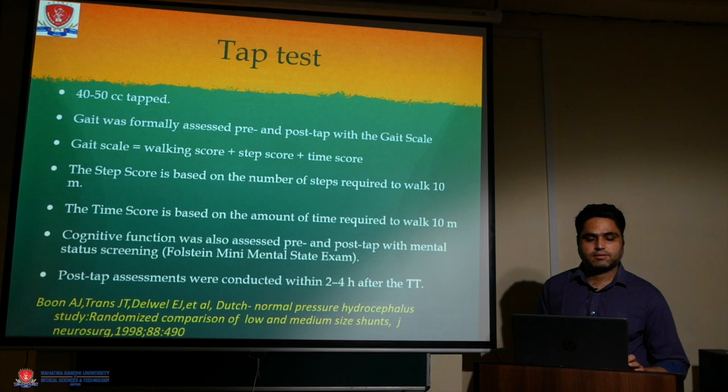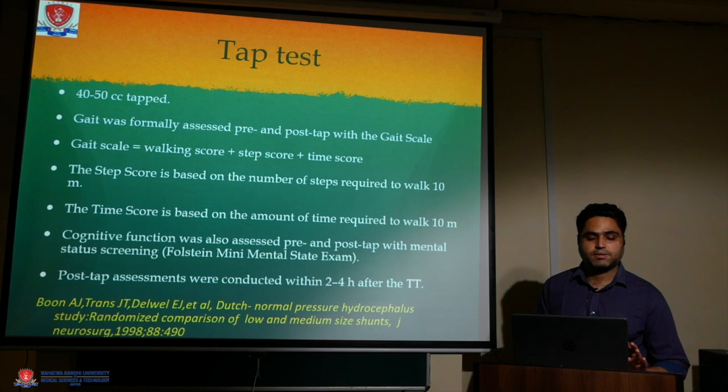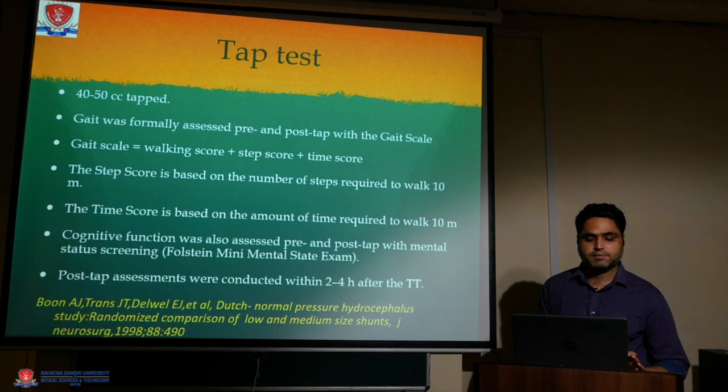For the tap test, 40–50 cc is removed and gait is formally assessed pre- and post-tap using the gait scale. The gait scale is the walking score plus step score plus time score. The step score is based on the number of steps required to walk 10 meters; the time score is based on the time required to walk 10 meters. Cognitive function is also assessed pre- and post-tap using mental status screening, conducted within two to four hours after the tap test.